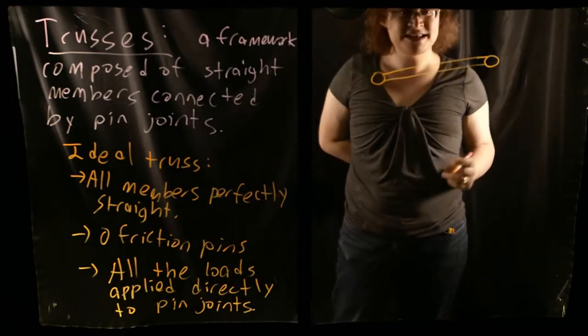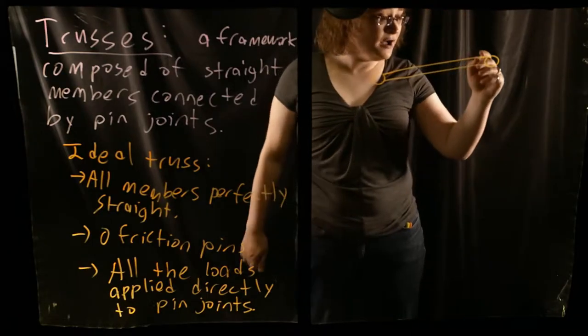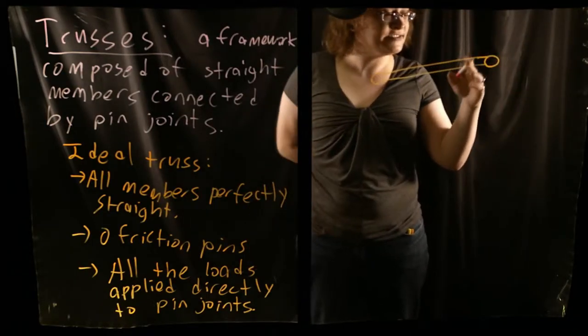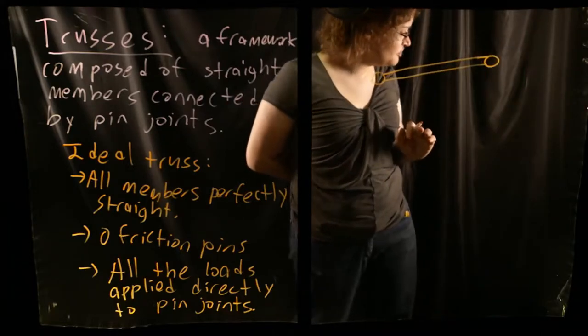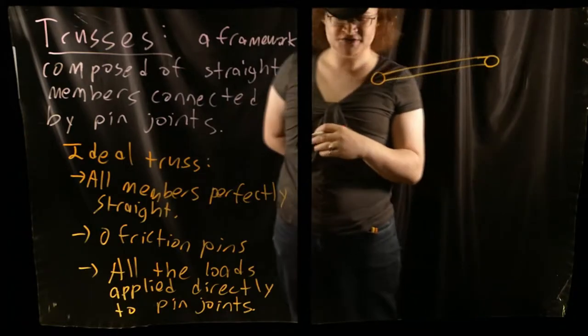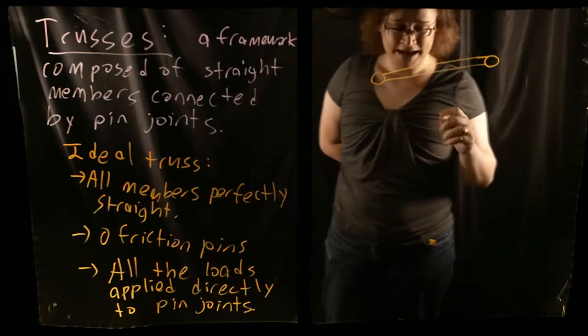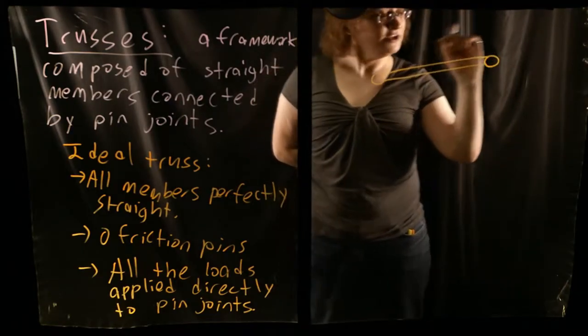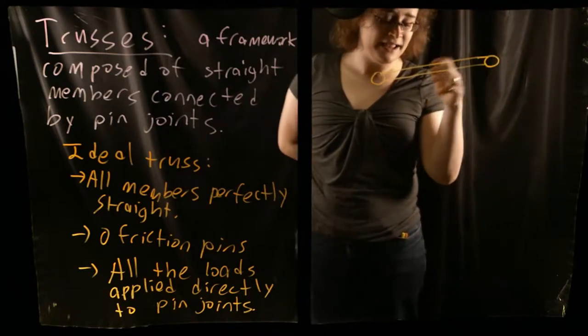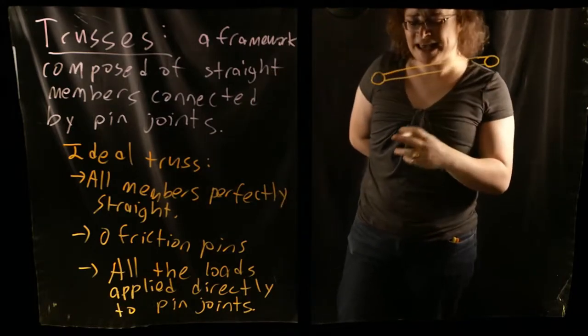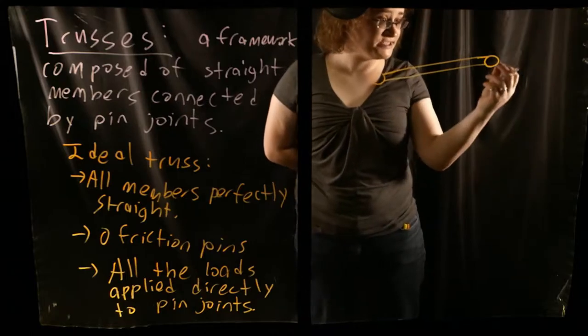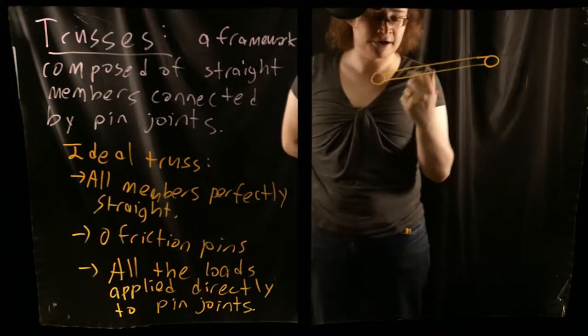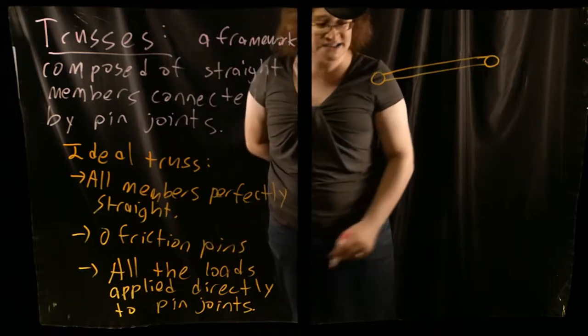Zero friction pins, of course, can't exist. There is always going to be some element of internal friction within the pin joints. And we don't usually actually use pins in truss joints. We have things that we can model and analyze as pins, but they're not true zero friction pins.